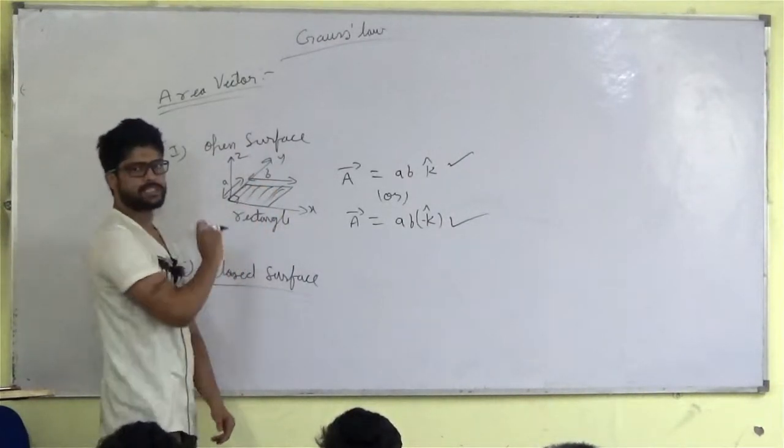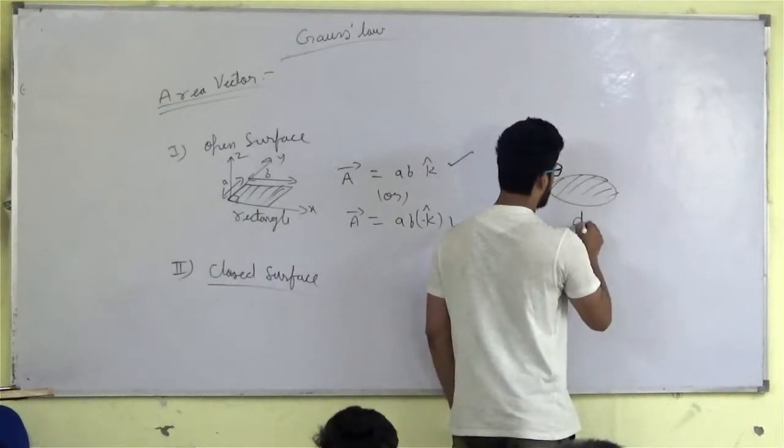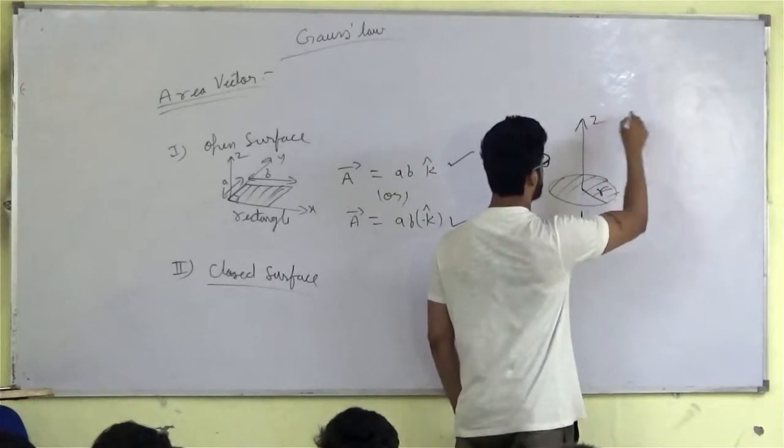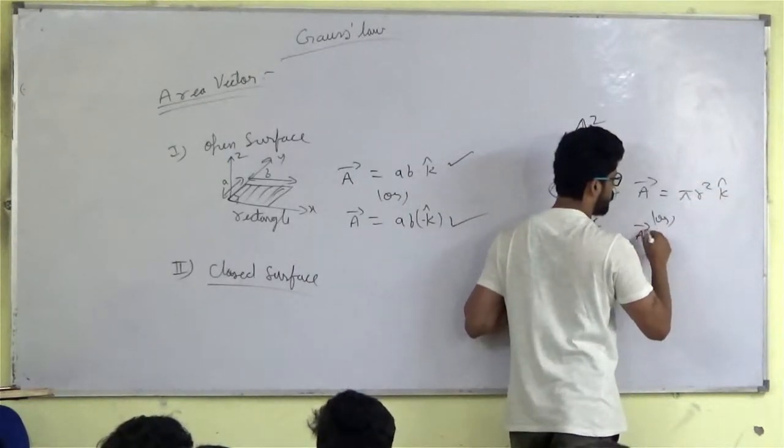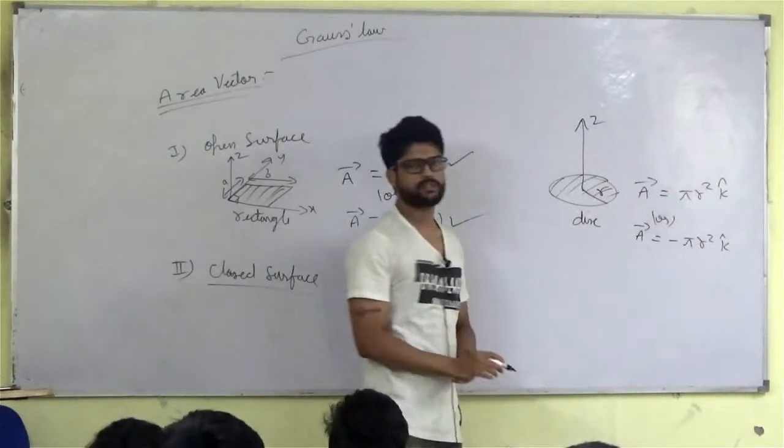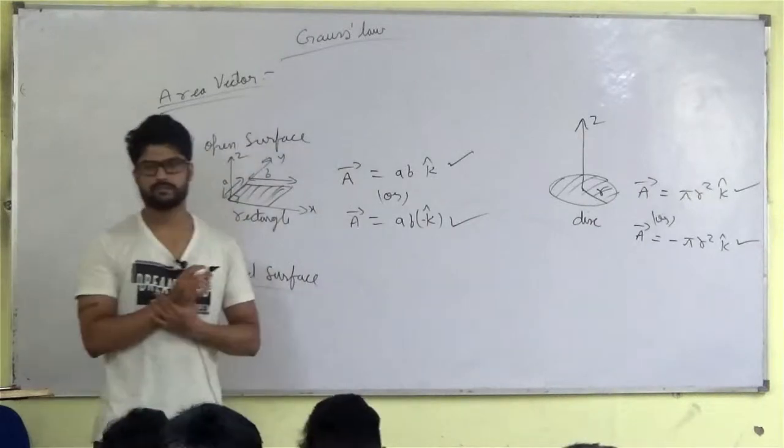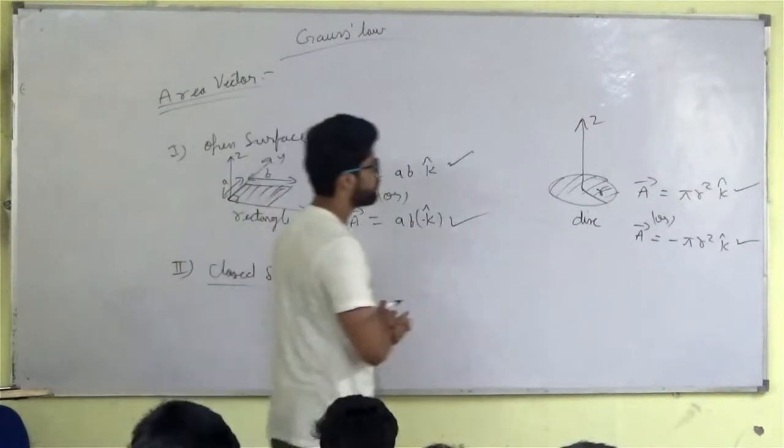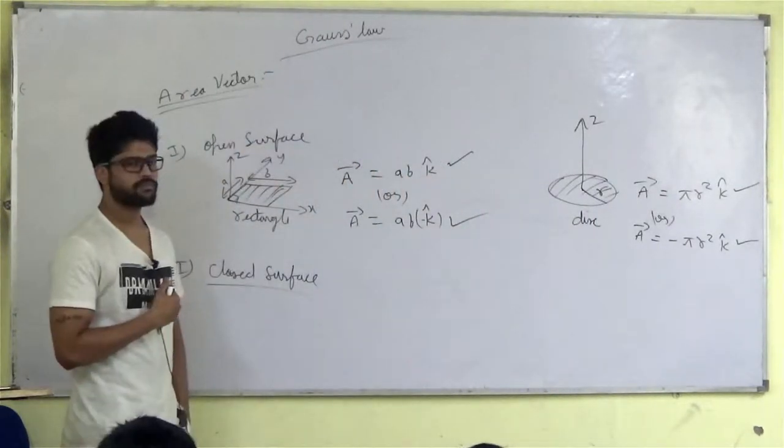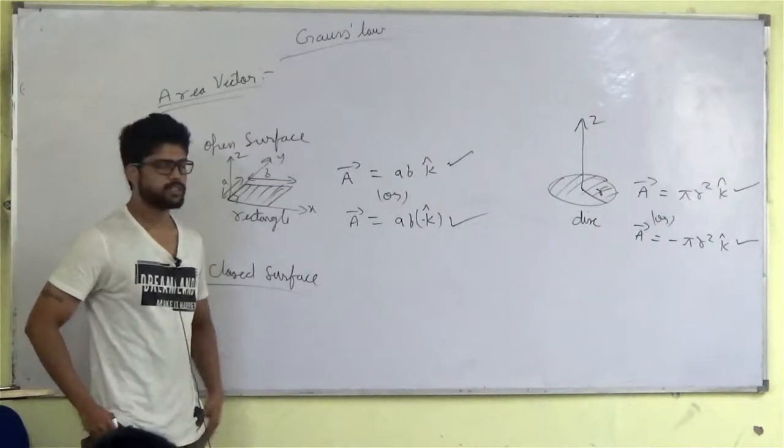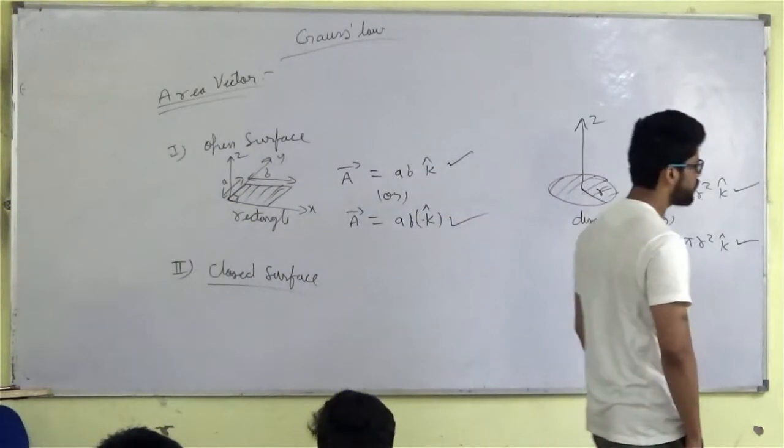So if I go to a disk, right, it's going to see what happened, the area vector pi R squared or minus pi R squared. Both are correct, no problem. You can do anything, but you must take one. Consider either one of the two directions and follow it throughout the question.